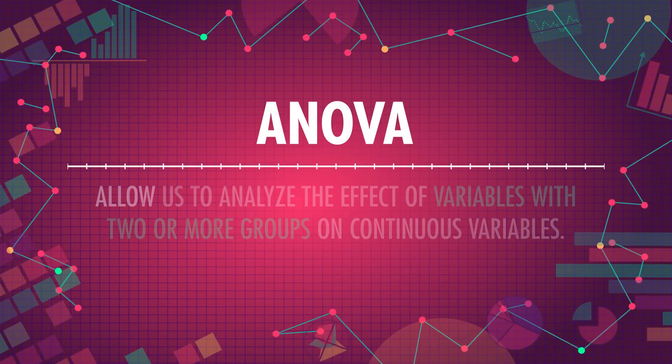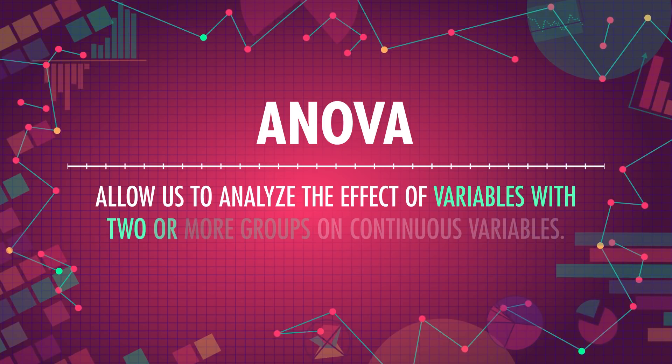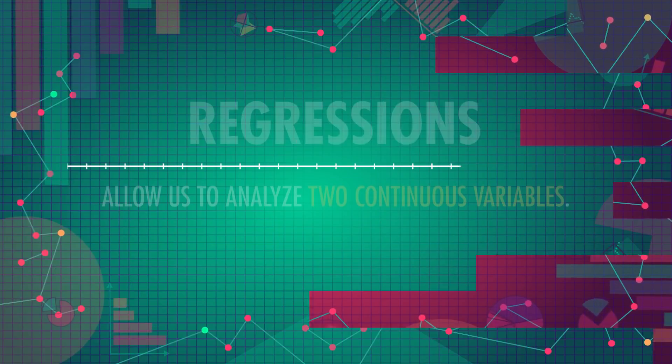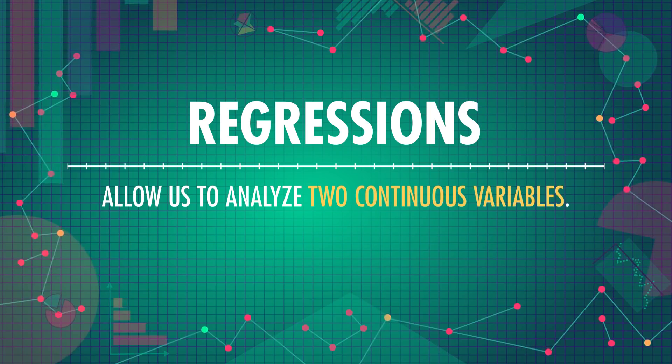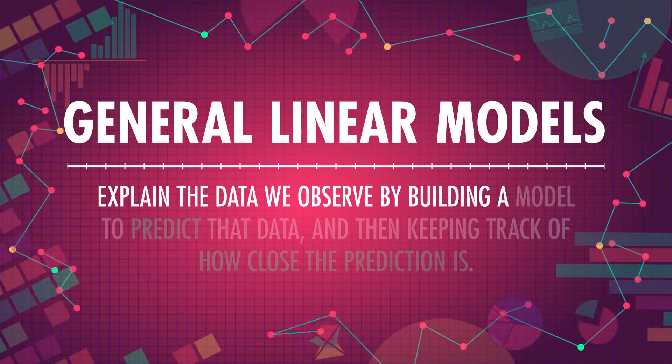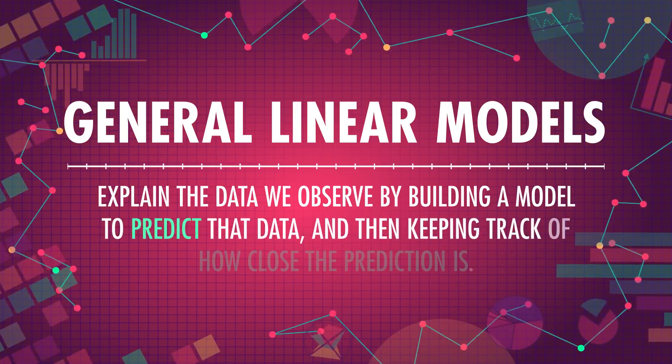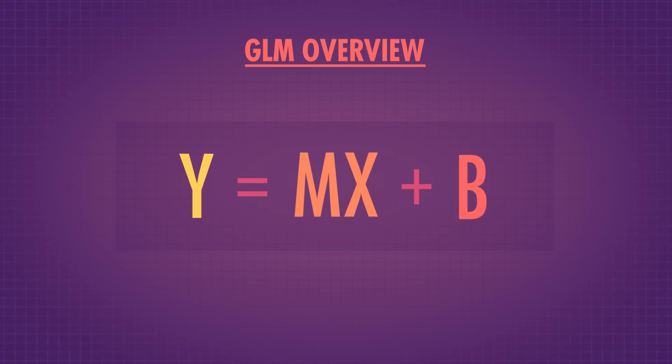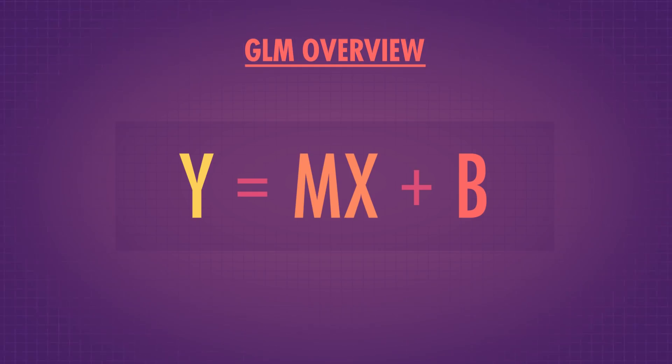As a quick review, in a few of our past episodes, we covered the fact that ANOVAs and regressions are both general linear models. ANOVAs allow us to analyze the effect of variables with two or more groups on continuous variables, and regressions allow us to analyze two continuous variables. General linear models explain the data we observe by building a model to predict that data, and then keeping track of how close the prediction is. Both regressions and ANOVA use a similar model setup — it looks just like the equation for a line from algebra. This means we only have to remember one general model, and it allows us to combine these two powerful models to give us the even more flexible ANCOVA.